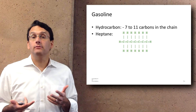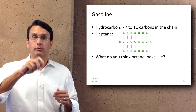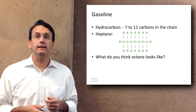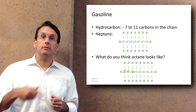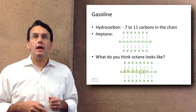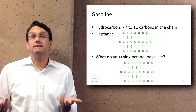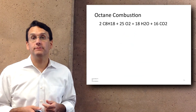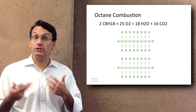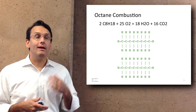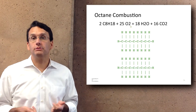Octane is another component. When you go to get gas and it says 89 octane, this is the octane they're talking about — it's eight carbon atoms in a row surrounded by hydrogens. I wanted to talk a little bit about the process by which energy is released by octane combustion. Here we see two octane molecules as well as the chemical formula for the octane combustion process.